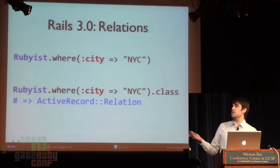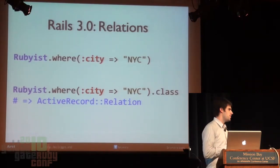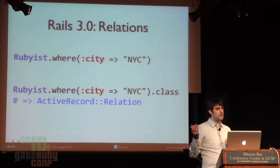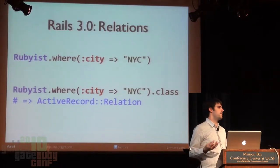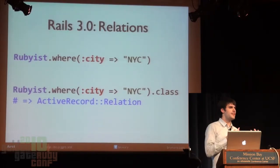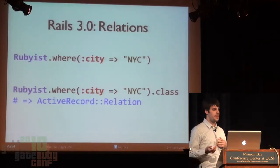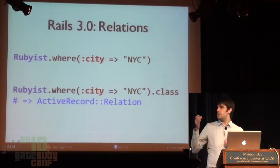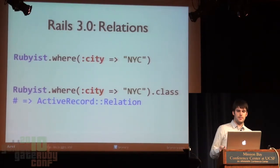Fast forward to today — Rails 3 has shipped. Here's an example of the syntax you can leverage: you say Rubyist.where(city: 'NYC'). To me this feels almost as expressive as this concept can be translated into code. There's really not much boilerplate to cut here. I'm not sure how much better we can get with this given the current Ruby parser. And what comes out of that is a relation class, which we'll talk about a bit more as we go.